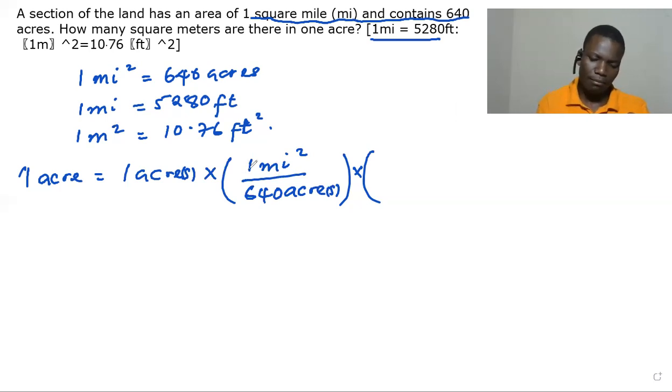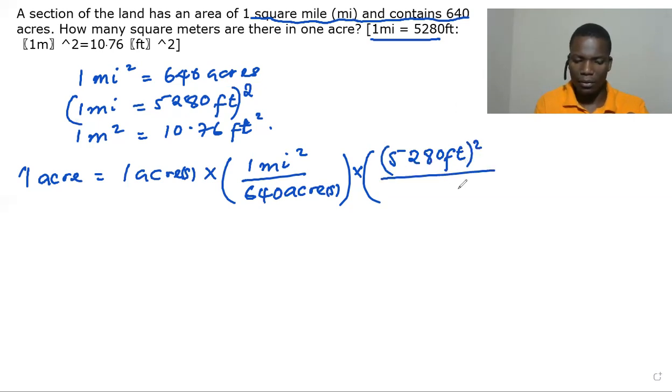Okay, so now the square mile cannot cancel here. So we square this, and then we have 5,280 feet. Okay, and they hold this squared, and then we have one mile squared. Okay, that's another conversion factor.